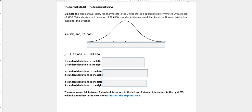So in this example, it says the mean annual salary for pharmacists in the United States is approximately symmetric with a mean of $150,000 and a standard deviation of $25,000, rounded to the nearest dollar. Label the normal distribution model for this situation. And these are numbers actually more like Washington State, but we're going to just go with these numbers, even though I don't think these are exactly what you would find for the United States.